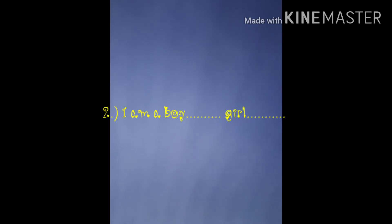The second line is: I am a boy ___ / girl ___. You have to select your gender. If you are a boy, tick on boy. If you are a girl, tick on girl.